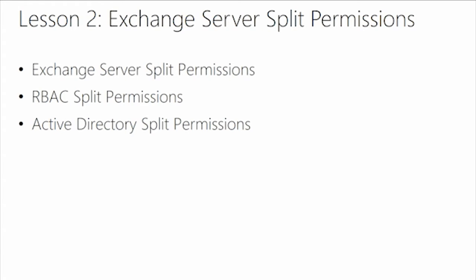Now let's look at Exchange split permissions. Active Directory and Exchange are highly integrated with one another. In smaller organizations, a single team of administrators manages both Exchange objects and Active Directory objects — that's called the shared permissions model. In larger organizations, it's common to have a dedicated team solely for Active Directory and a separate team solely for Exchange. When you separate those two, that's called the split permissions model.